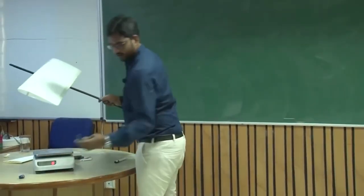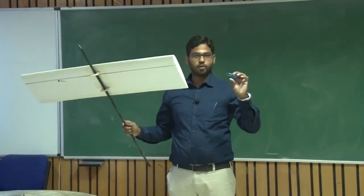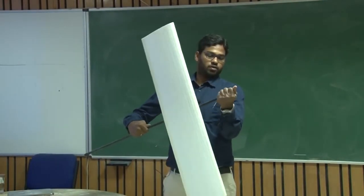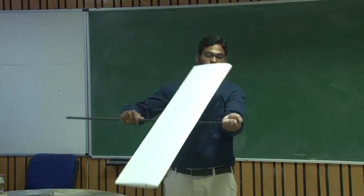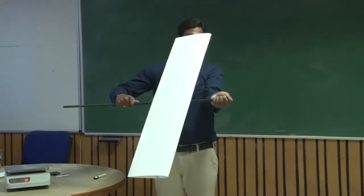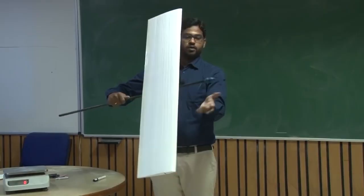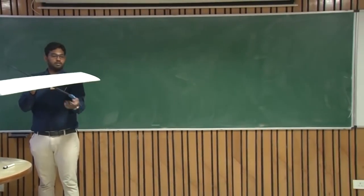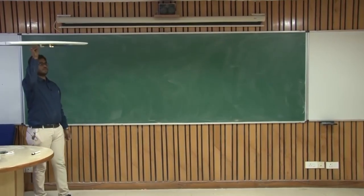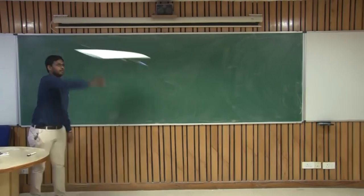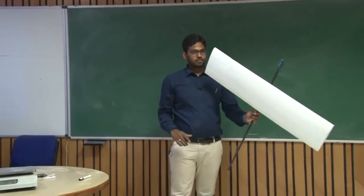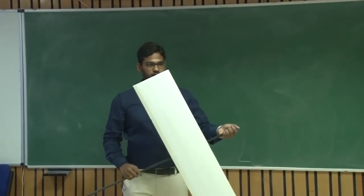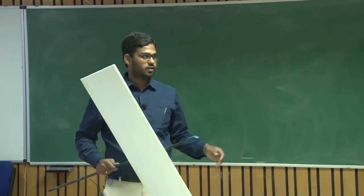Let me do a small trick. This is molding clay which I borrowed from the UAV lab here. I have attached this molding clay to the rod connecting the wing. Now let us see how it is going to fly. It is better - as soon as I add this molding clay, it started gliding. It is not flipping the way it behaved in the first case.